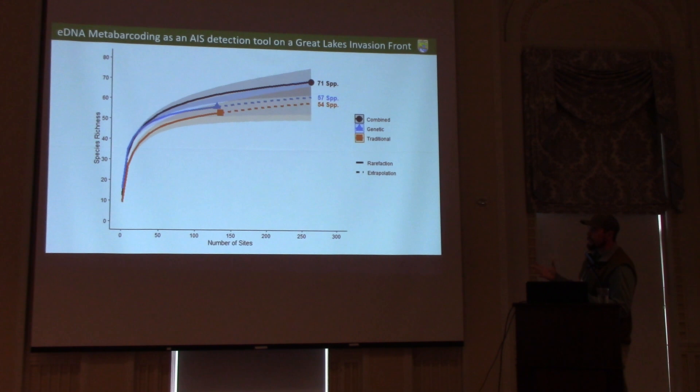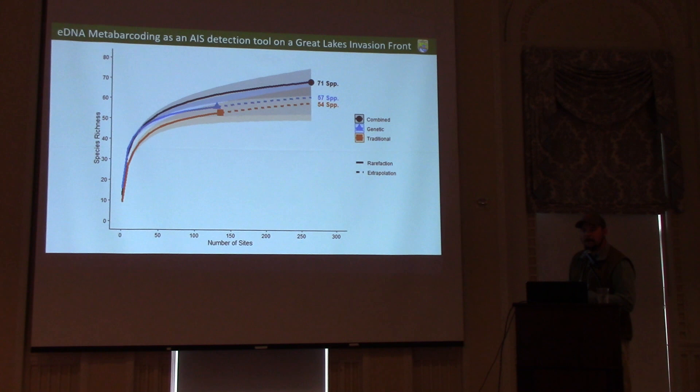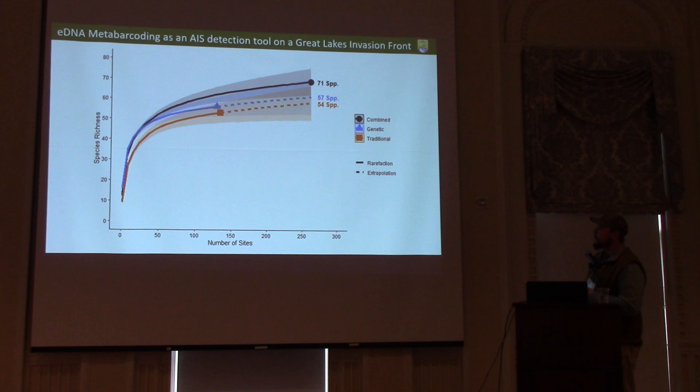We also compared the two methods from a diversity perspective using a species accumulation curve. Orange is the traditional method and blue is eDNA metabarcoding. Getting species richness per sample, it takes roughly the same amount of effort to reach the observed species richness. The eDNA metabarcoding might get you to a given number of species a little bit quicker, but what stood out was that when you combine the two methods, you get a more robust picture of the community — a total of 71 observed species when combining both.